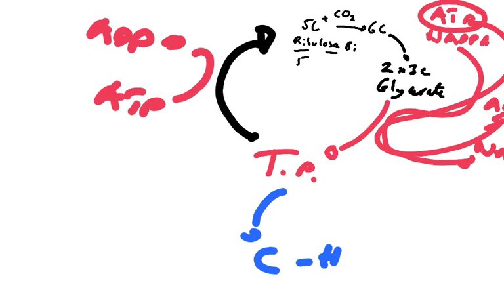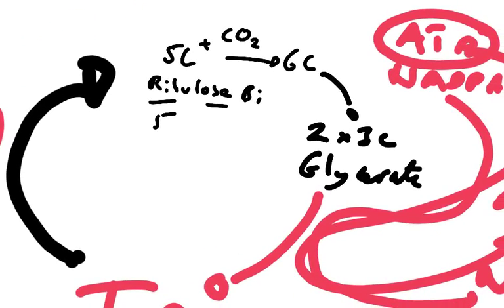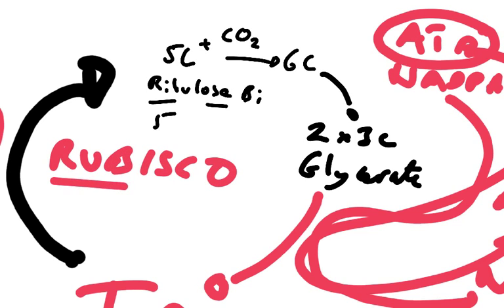The final thing to point out is that this step, the carboxylation of RuBP, is done by an enzyme called RuBP carboxylase. That takes this five-carbon compound and carboxylates it. And that is called RuBISCO, as in RuBP carboxylase. It takes carbon dioxide and joins it with a five-carbon compound.